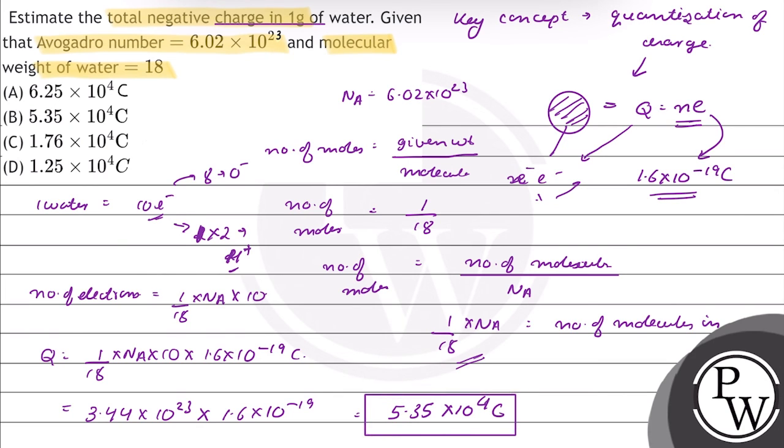So this much negative charge is present in one gram of water. For this question, the correct option is option B. Hope you understood this well, best of luck.